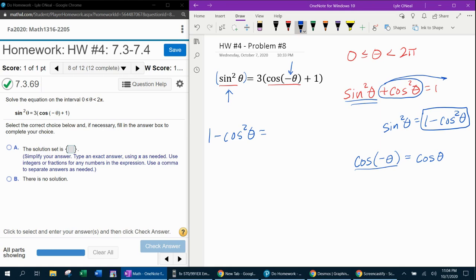So if I have cosine of negative theta, I can replace it with cosine of theta. And so that'll give me three times cosine theta plus one.